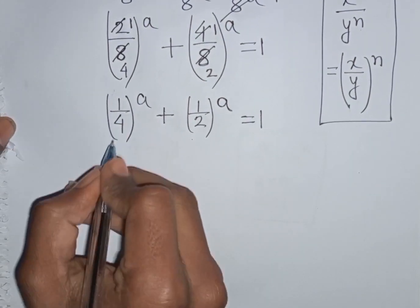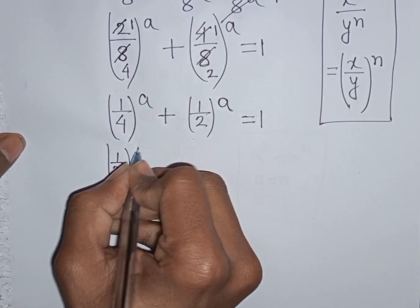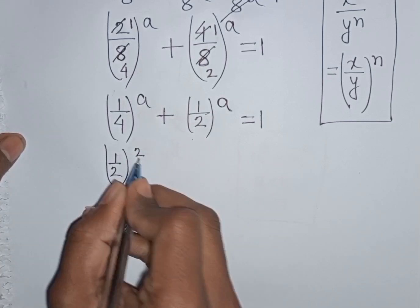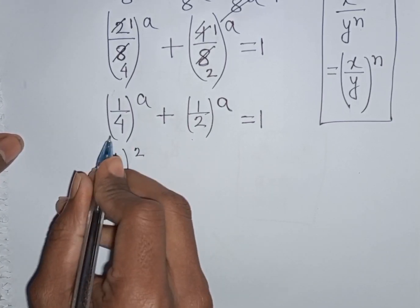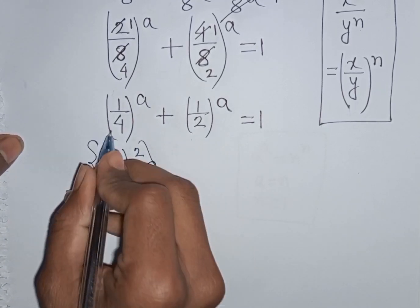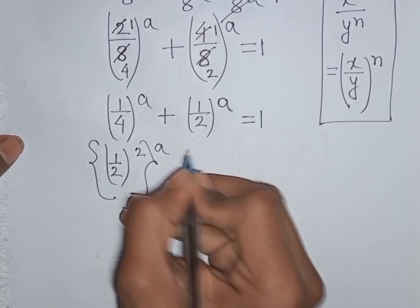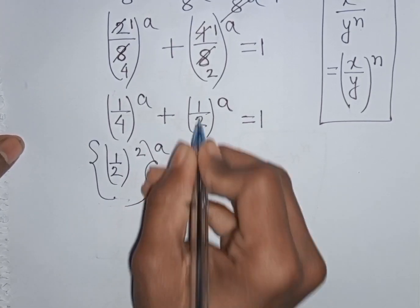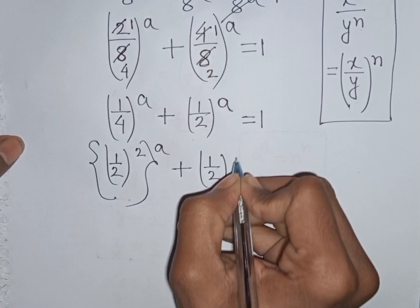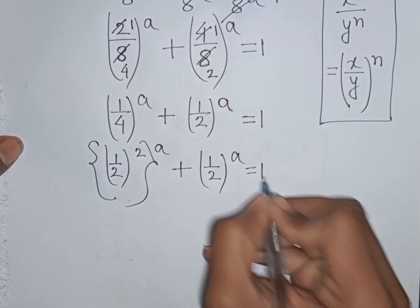Now 1/4 can be written as (1/2)^2, since 1 squared is 1 and 2 squared is 4. So the first term (1/4)^a can be rewritten as (1/2)^2 raised to power a, plus (1/2)^a is equal to 1.